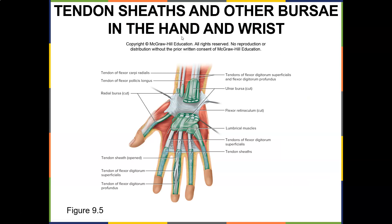Here are tendon sheaths and other bursa in the hand. You have an ulnar bursa and a flexor retinaculum. When these bursa get inflamed, that can cause pain — carpal tunnel and other conditions. If this area is inflamed, all the tendons would get compressed right there.